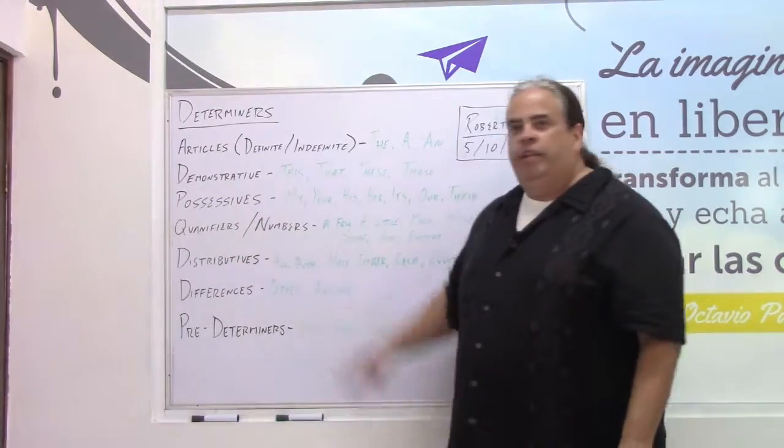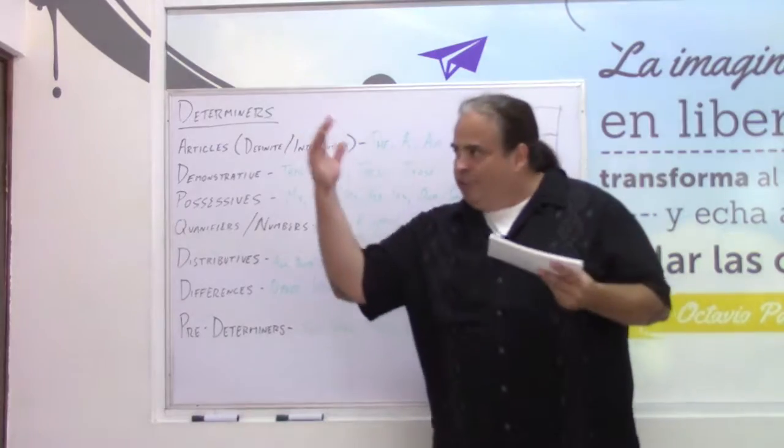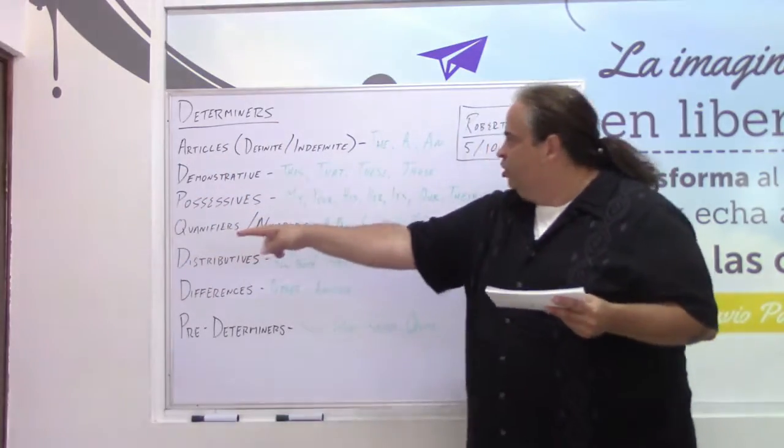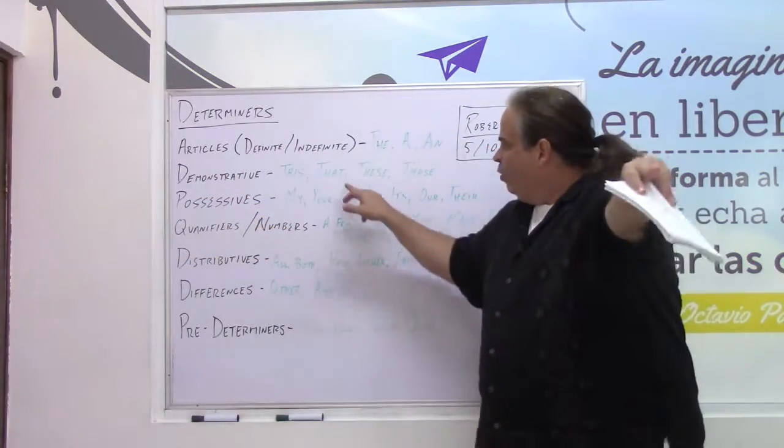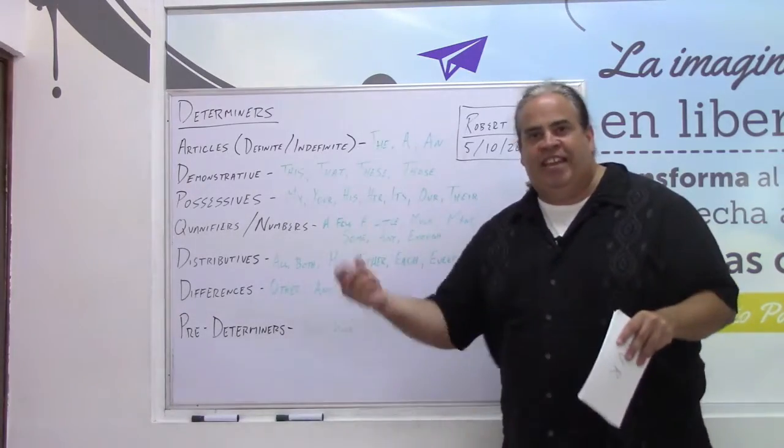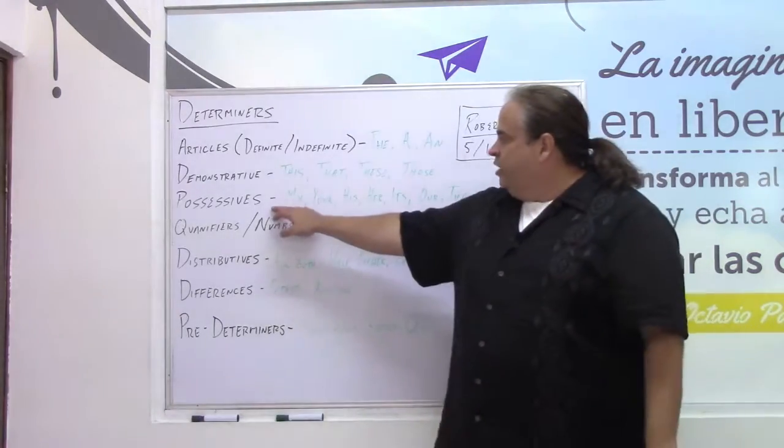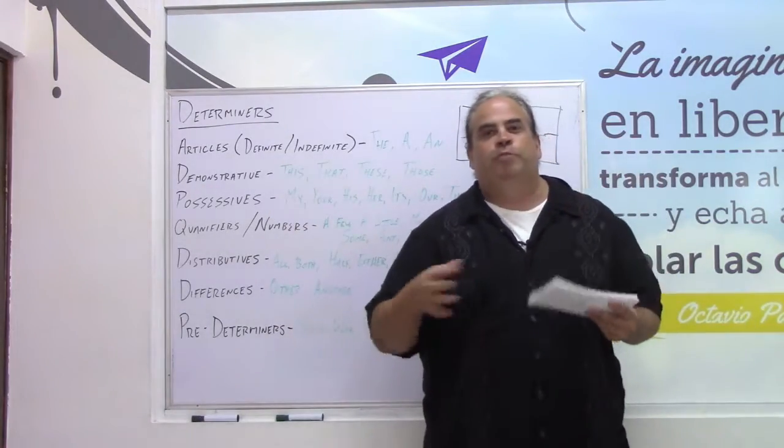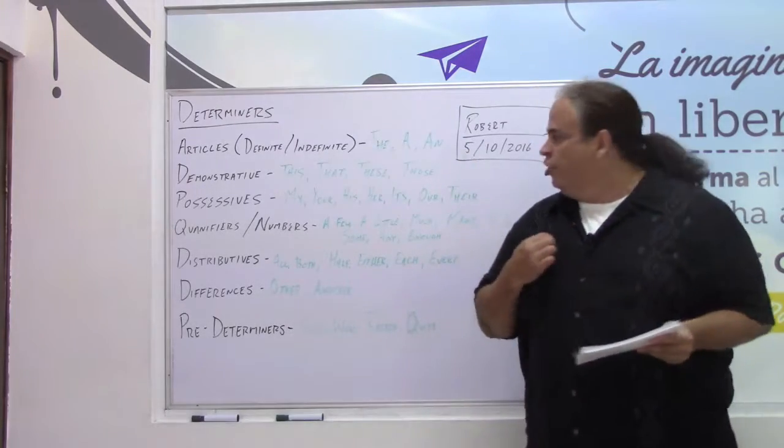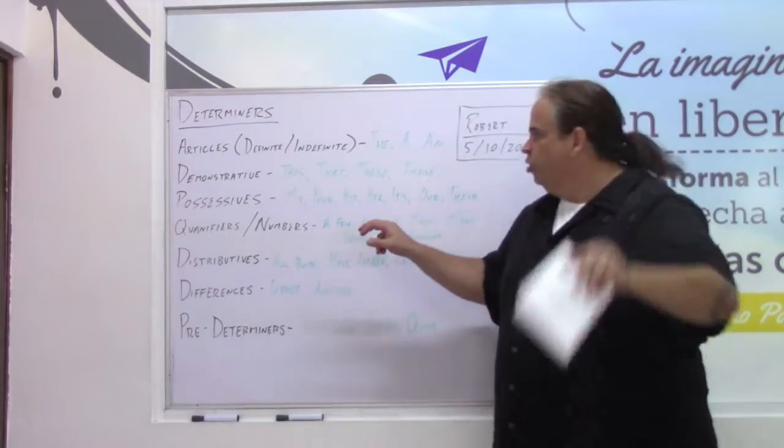Then you have the demonstrative that talks about something that is over there. This door, that window, these keys. The possessives, they claim ownership of a specific noun. This is my shirt. This is your shirt.